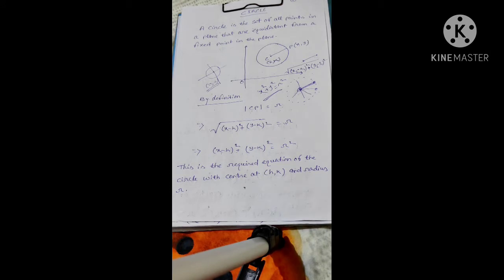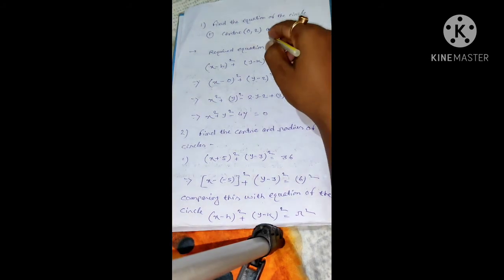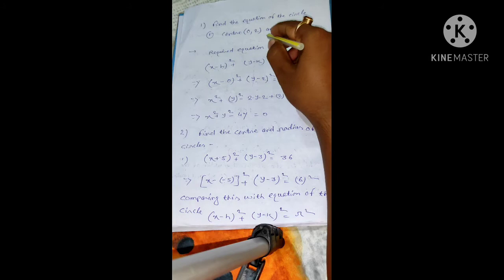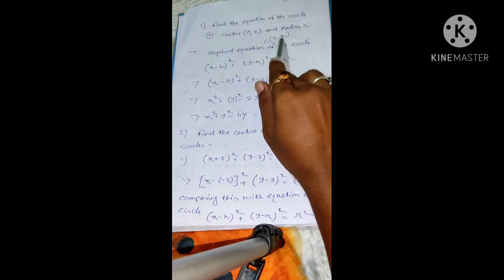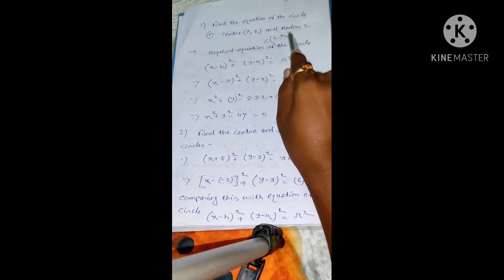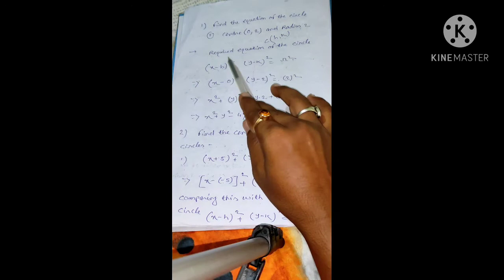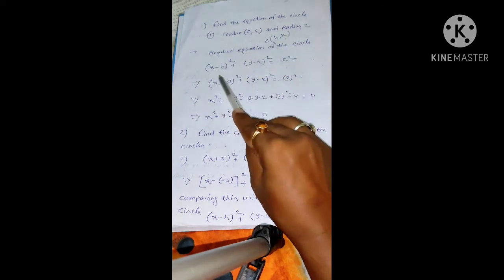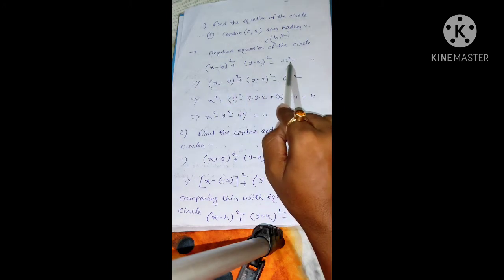Now, based on this equation, let us see some problems. Find the equation of a circle with center (0, 2) and radius 2. In the question, the center coordinate is h, k, so h equals 0 and k equals 2, and the radius r is given as 2. We have to find the equation. The equation of a circle with center (h, k) is (x minus h) squared plus (y minus k) squared equals r squared.